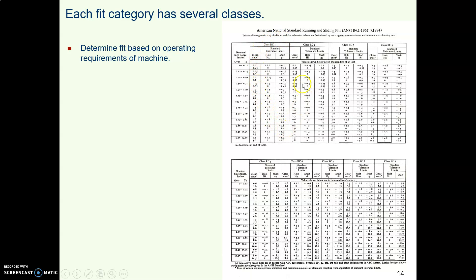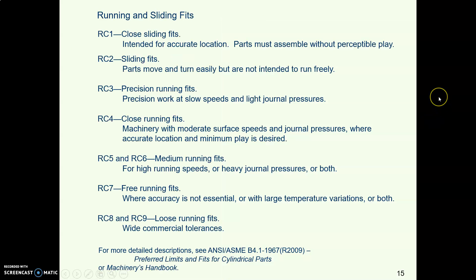First thing to notice in this running clearance fit chart is that it has nine different classes. So here is class RC1, the things in here. Here's RC2 and you can see that the classes continue on up to RC9. So what?